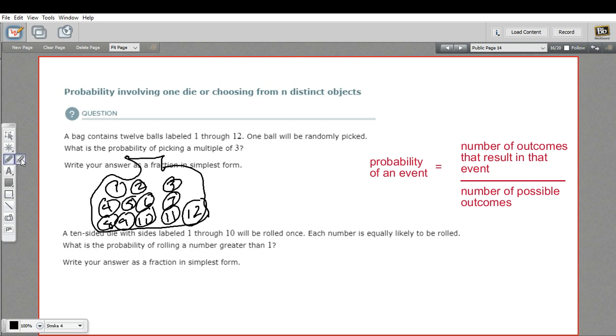So which ones are multiples of 3? Well, 3 is, and 6 is, and 9 is, and 12 is. So what we have here is we have 4 number of outcomes.